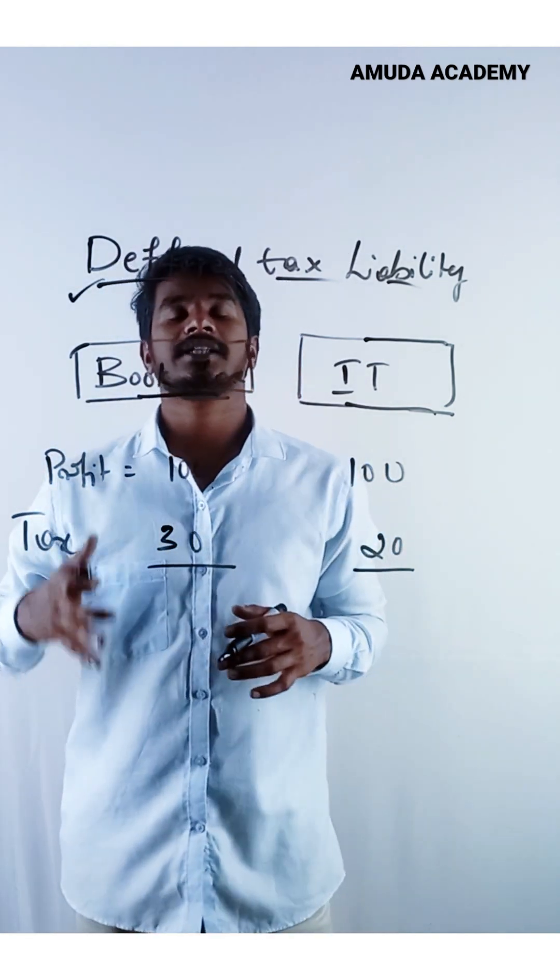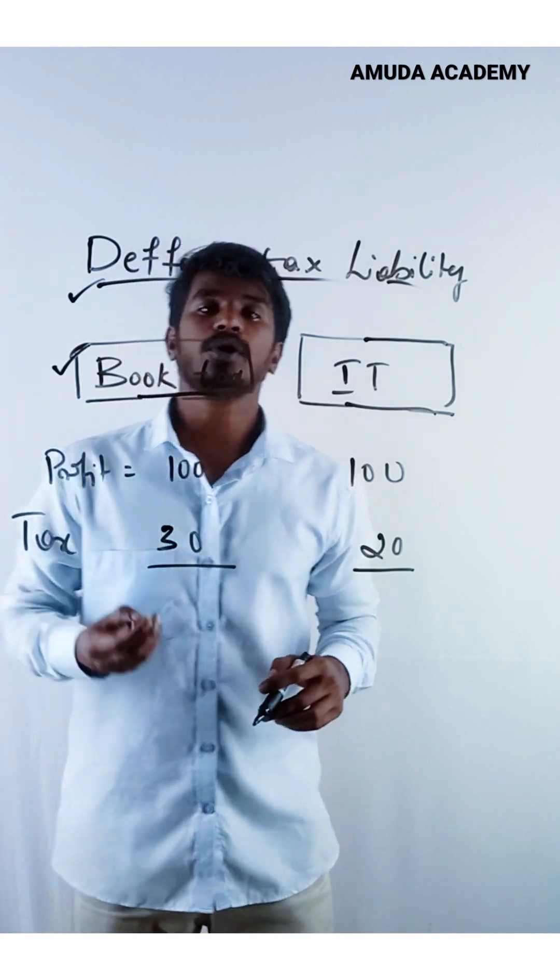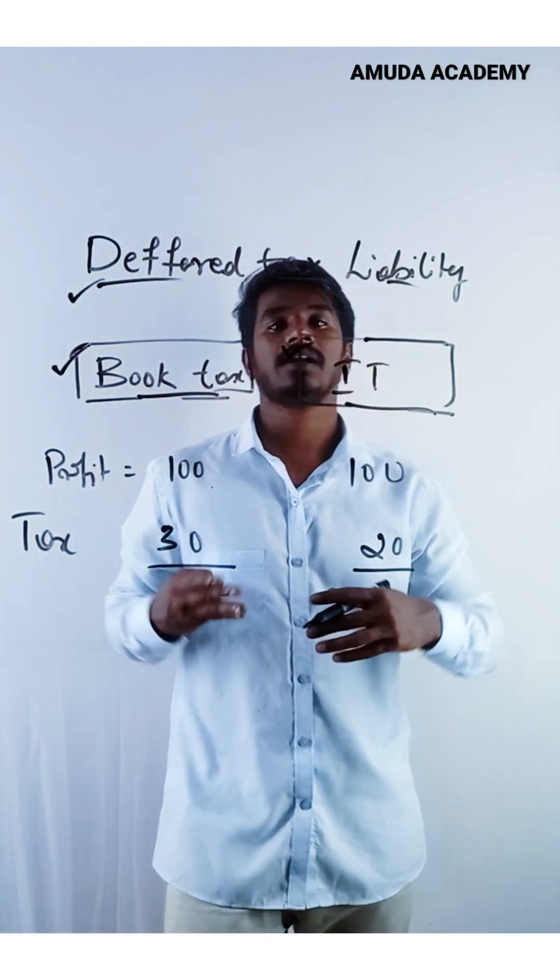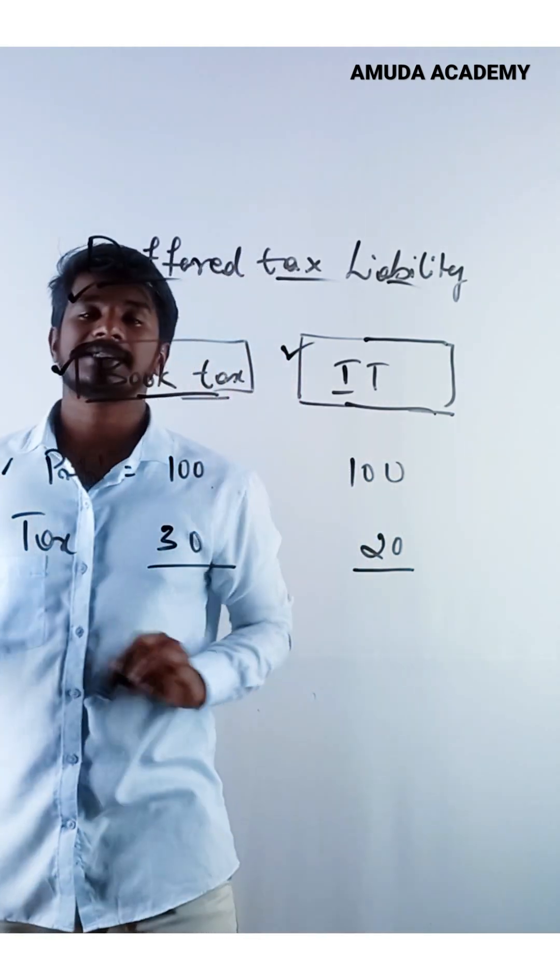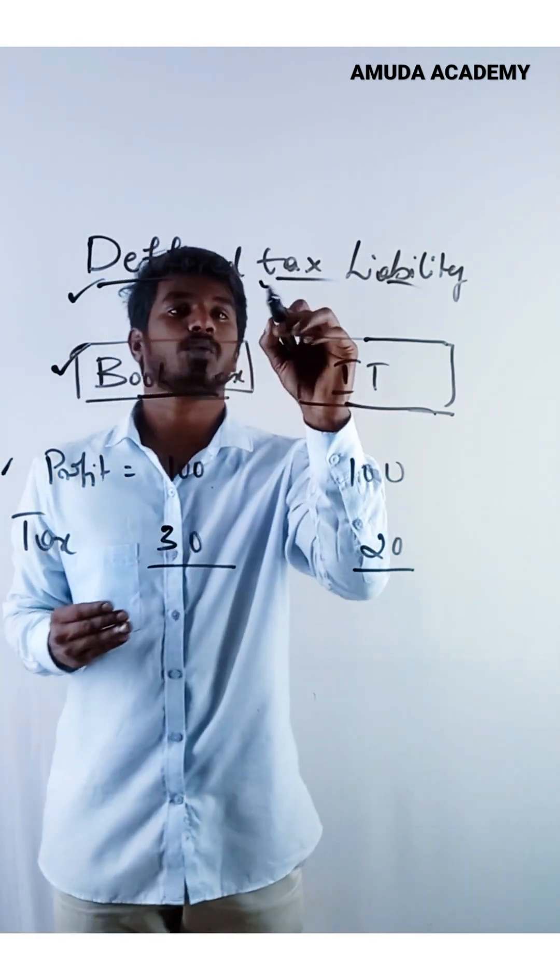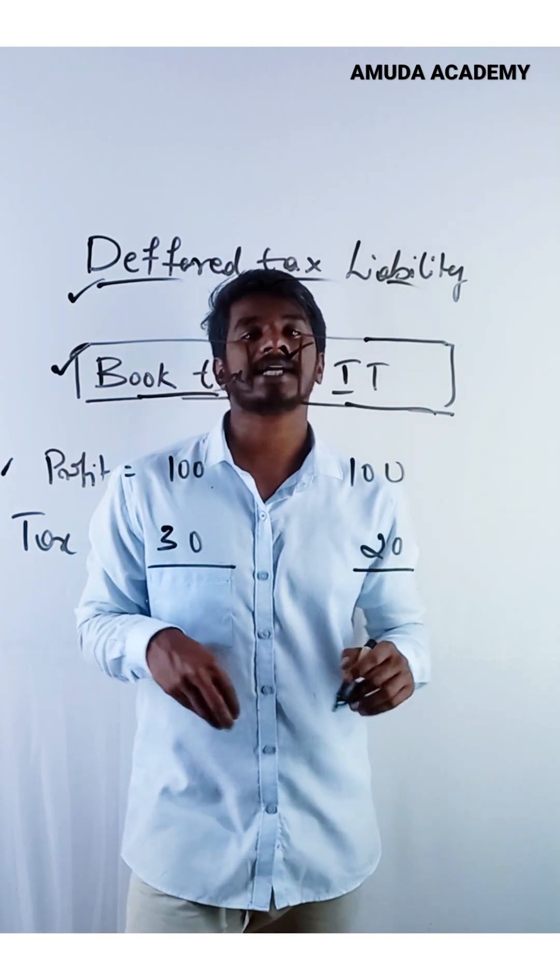Deferred tax liabilities are nothing but the difference between book tax and actual income tax. This is the difference. So let us take an example and understand what will be the deferred tax liability.